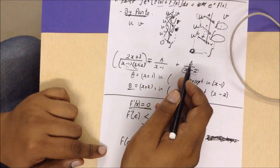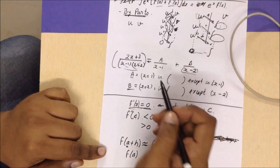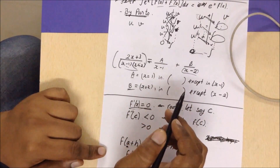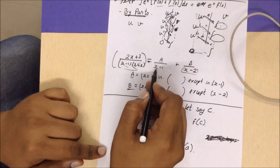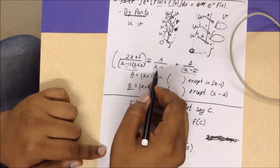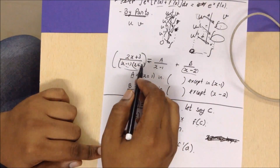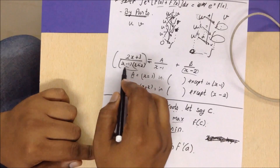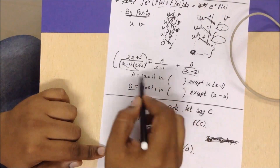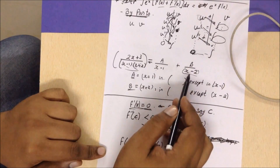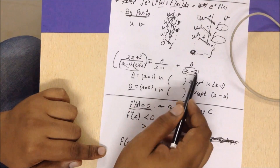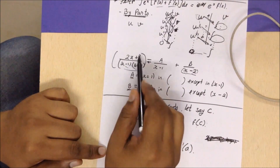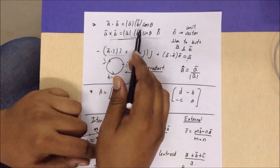For the partial fraction method, to find constants A and B when the denominator has factors like (x-1) and (x-2): to find A, look at the factor under A, which is (x-1), substitute x=1 into the entire left-hand side expression excluding that factor. The result is your A value. Similarly for B, substitute x=2 into the LHS excluding (x-2) to get B.